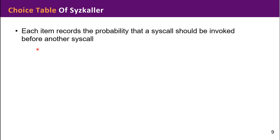Syzkaller is the most widely used kernel fuzzer. It uses the choice table to guide call combinations. Each item records probability that a syscall should be invoked before another syscall.